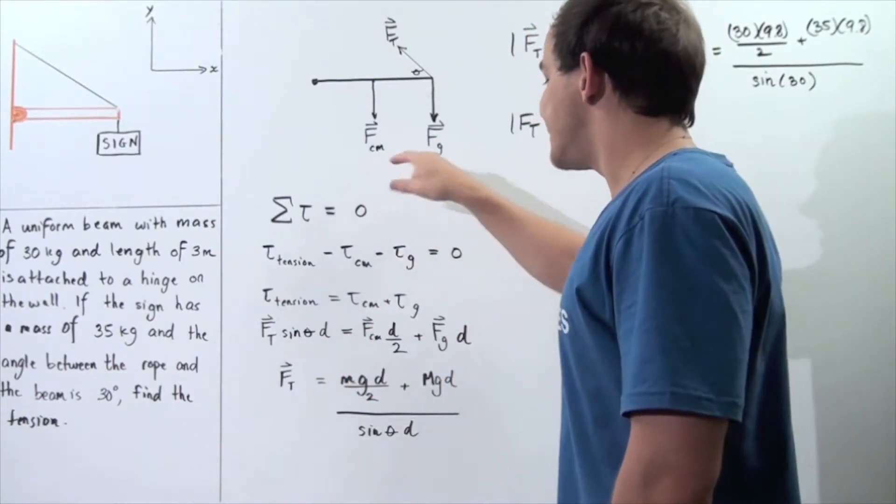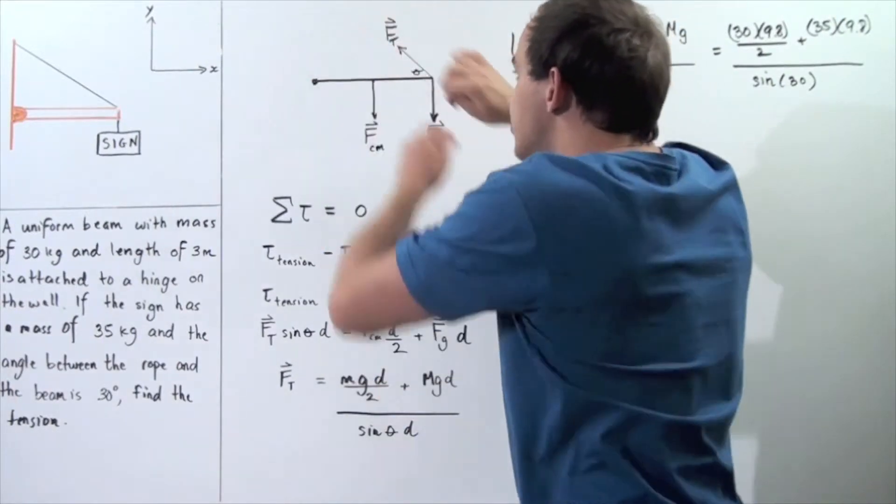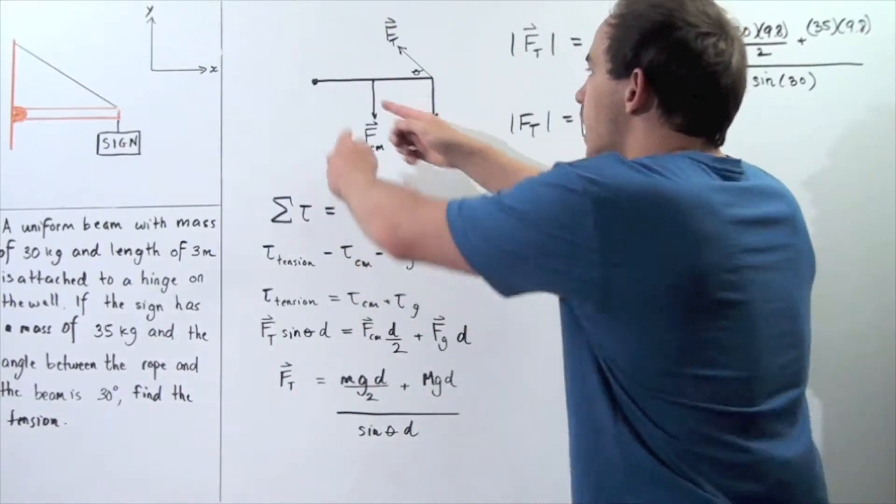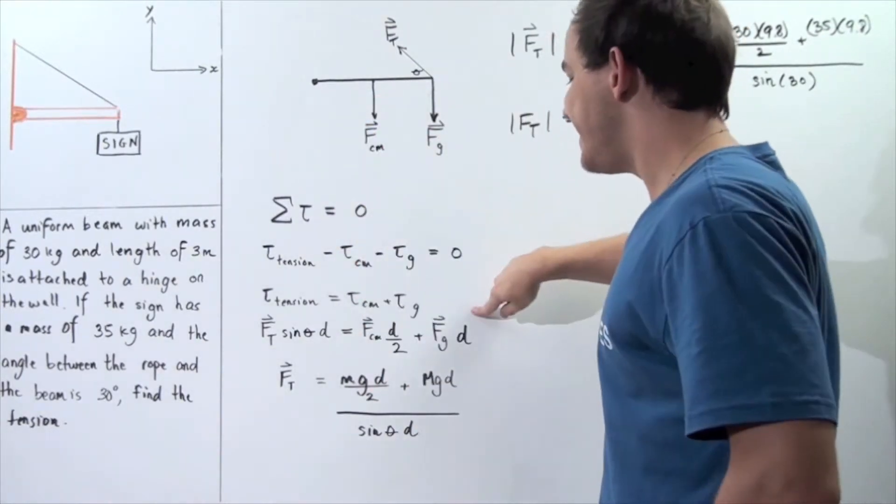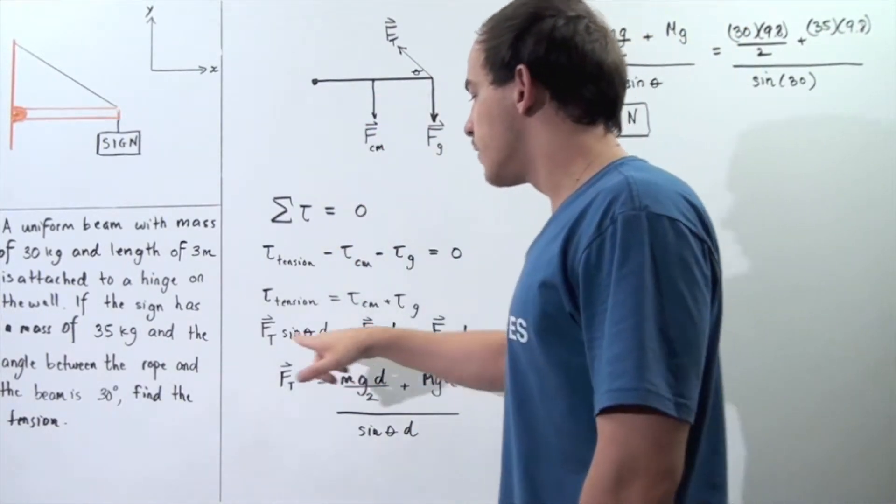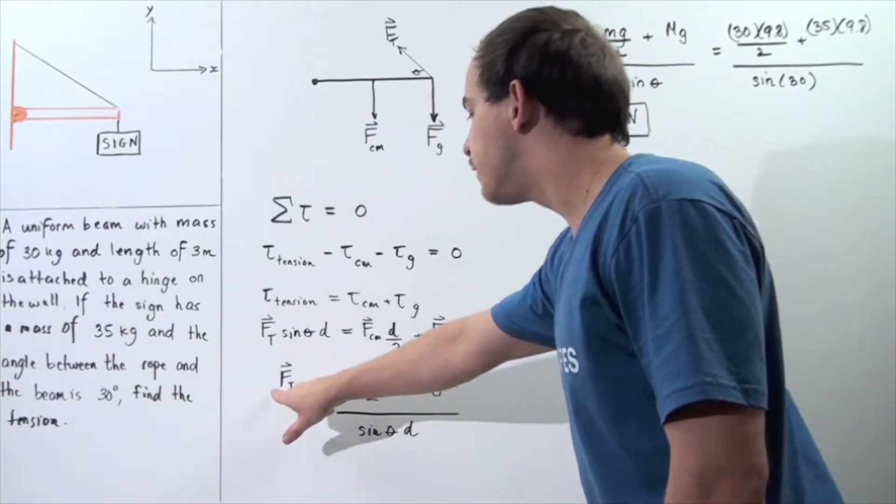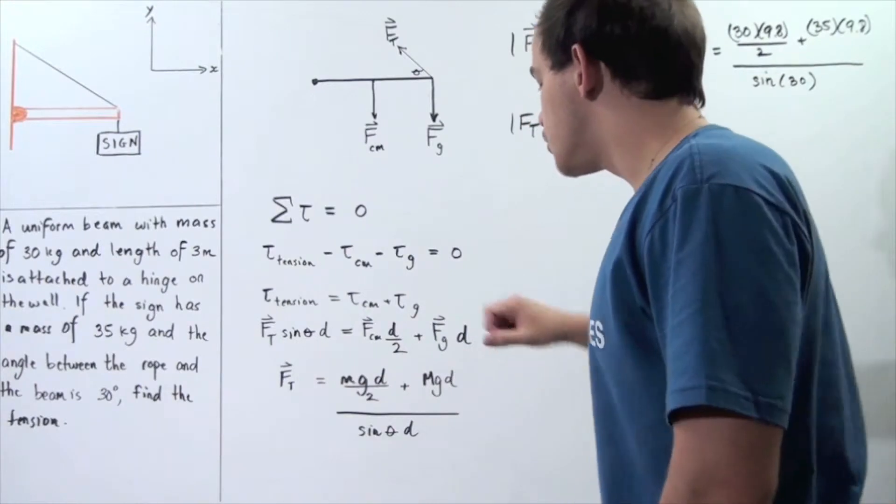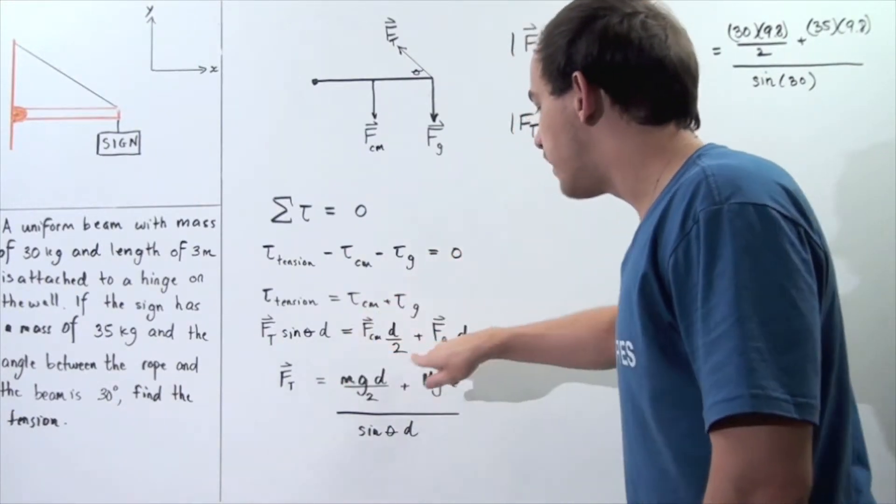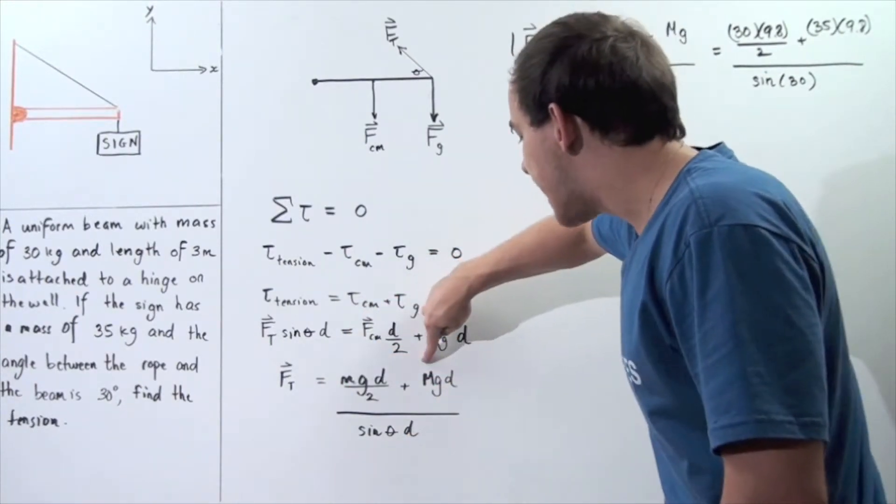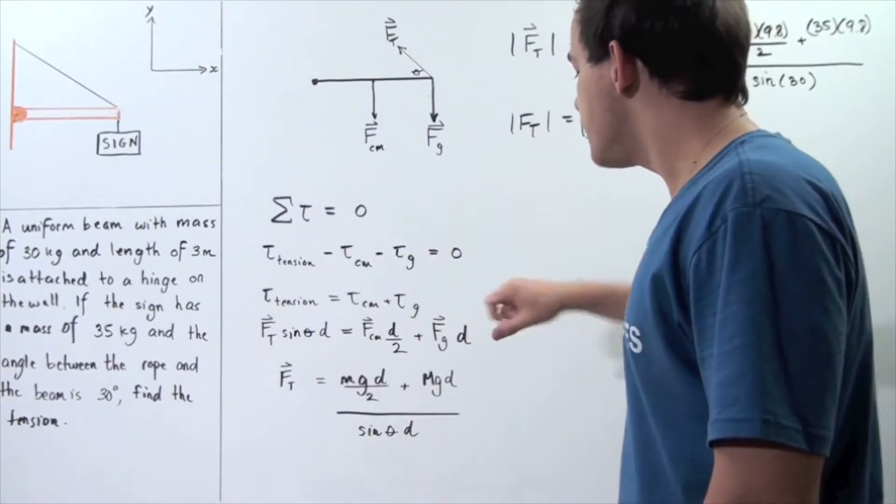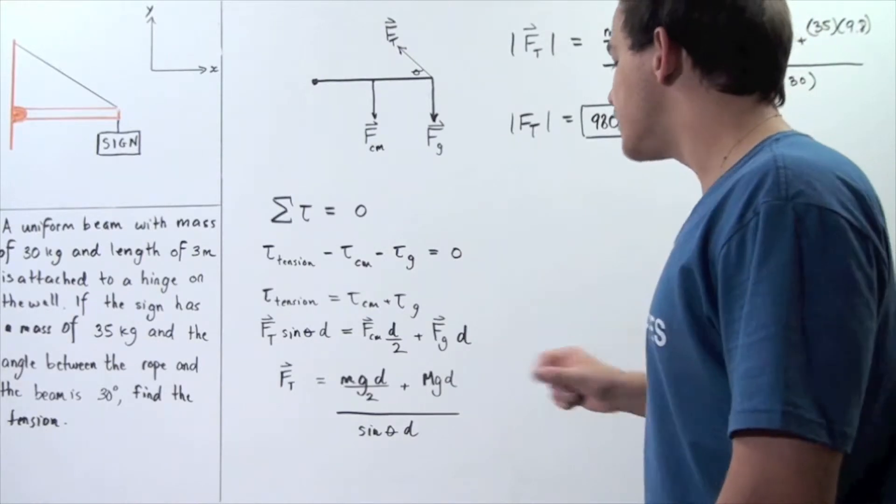the force Cm times half the lever arm, so D divided by 2, plus force G multiplied by the lever arm D. So now we solve for Ft and we see that the tension in our rope, Ft, is equal to Mgd divided by 2 plus capital Mgd, where lowercase m is the mass of the beam and uppercase M is the mass of the sign.